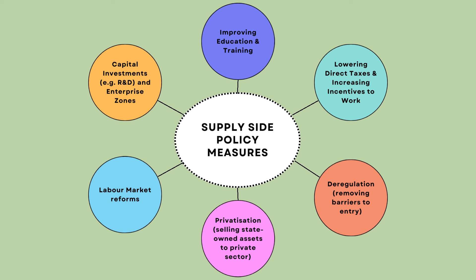Deregulation is the removal of rules and regulations. It can include the removal of barriers to entry, which will increase competition, increase efficiency and lower cost of production and also lower prices.